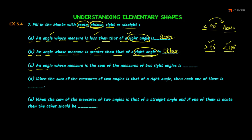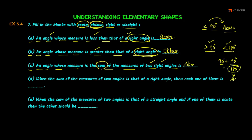Part (c): an angle whose measure is the sum of the measures of two right angles. Two right angles means two 90 degrees. So we add 90 plus 90 to get 180 degrees. 180 degrees is a straight angle. The answer is straight.